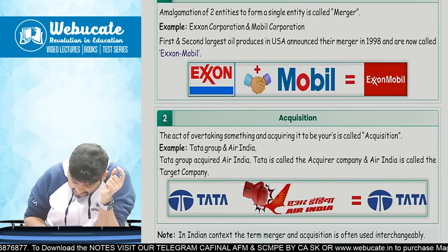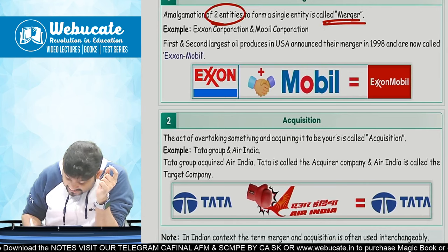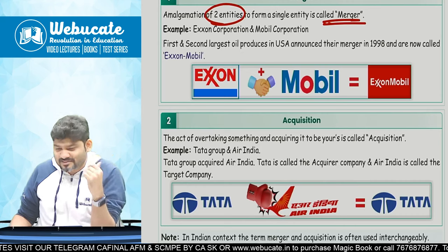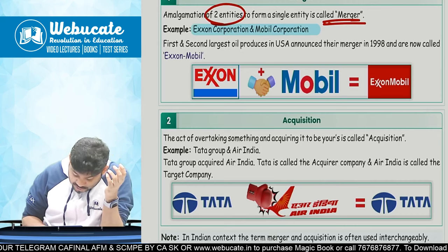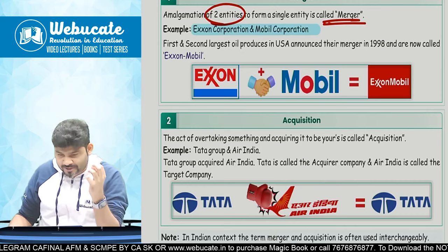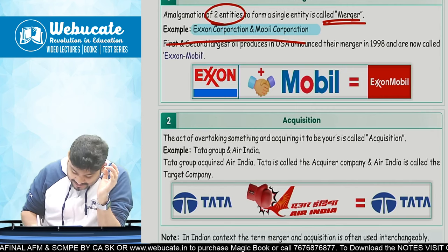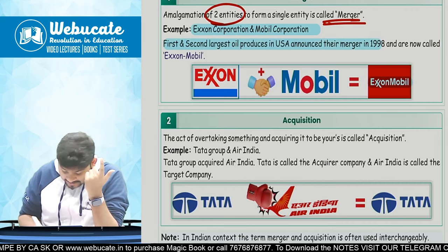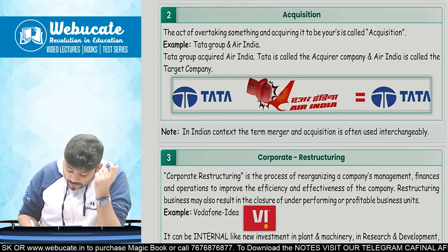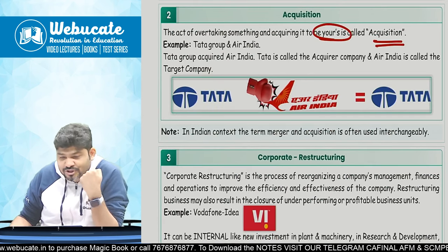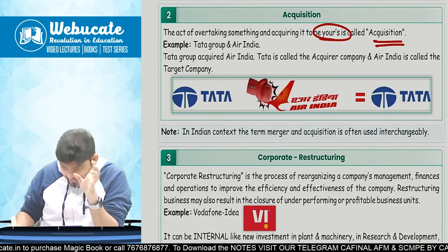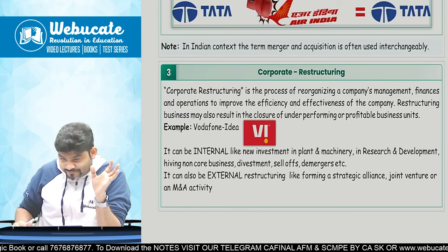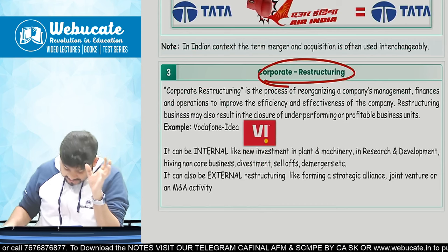So what is merger in the Indian context? Amalgamation of two entities to form a single entity is called merger. Exxon Corporation and Mobil Corporation — first and second largest oil producers of USA — announced their merger and became Exxon Mobil. The act of overtaking something and acquiring it to be yours is called acquisition. Tata Group acquired Air India; Tata Group is the acquirer company. Then comes corporate restructuring.